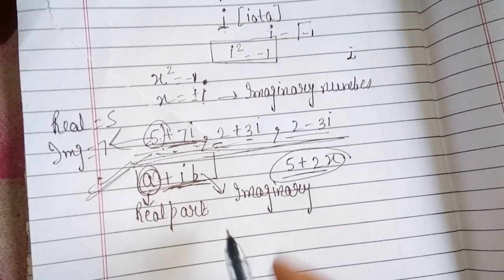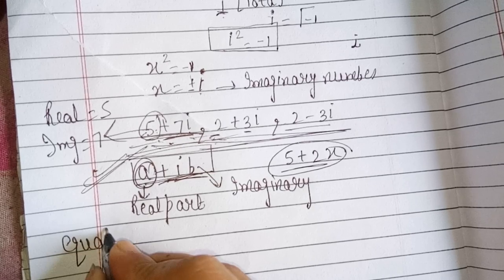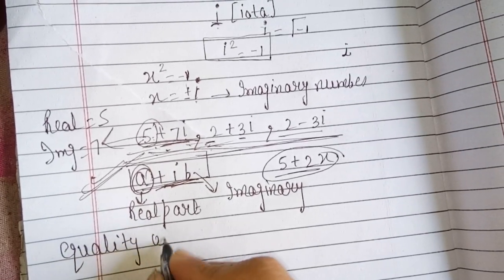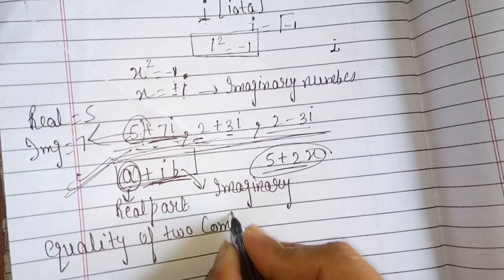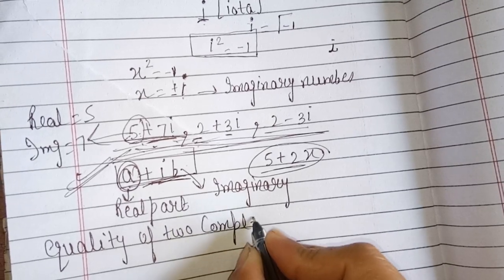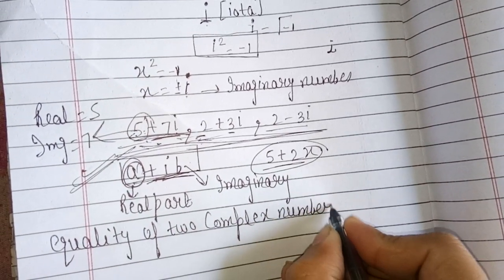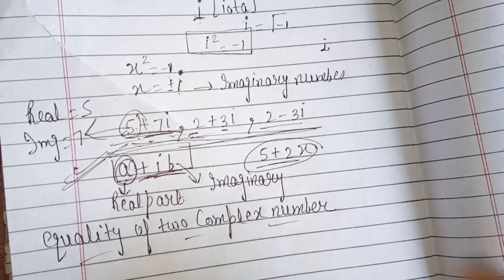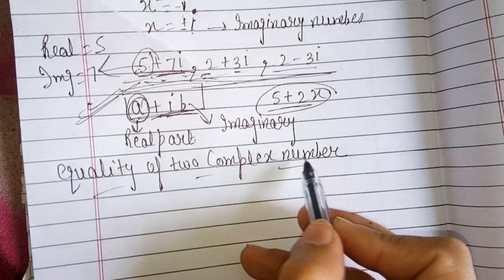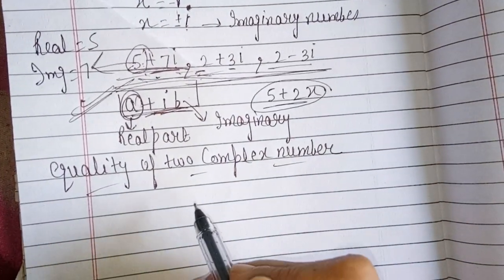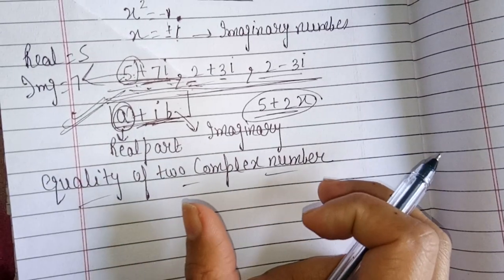Next, we will study the equality of two complex numbers. What does equality mean? Two complex numbers are equal when their corresponding parts are equal.